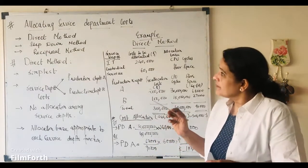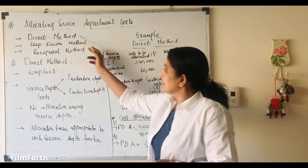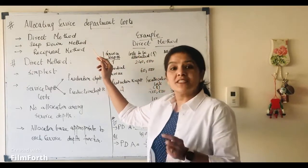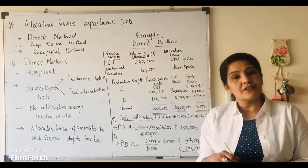There are three methods through which we can allocate the service department costs. One is the direct method, step down method or the step method, and reciprocal method. Today, in this video, we are going to do direct method.